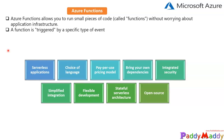It's also a pay-as-you-use pricing model — it charges only for what you use. There are different plans like the consumption hosting plan which we'll talk about in the next slide. Functions support bringing your own dependencies — it supports NuGet and npm, giving you access to your favorite libraries. Security is fully integrated, protecting your HTTP-triggered functions with OAuth providers such as Azure Active Directory, Facebook, Google, Twitter, or other Microsoft security providers for authentication.